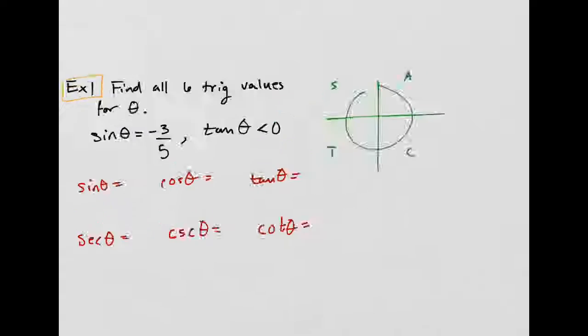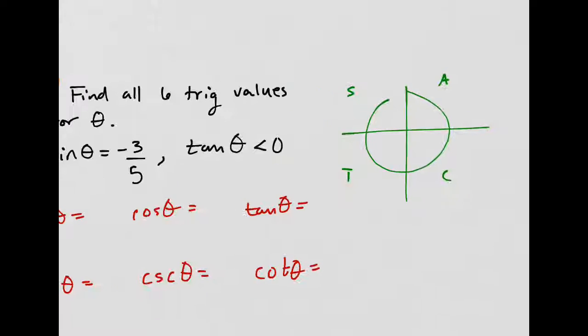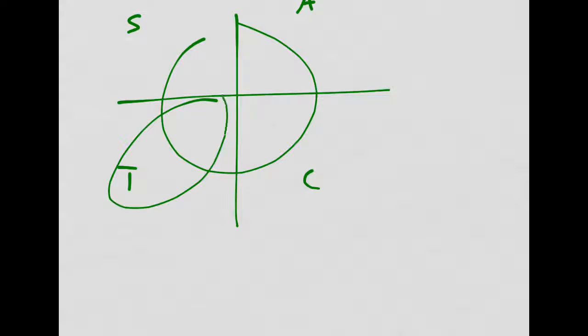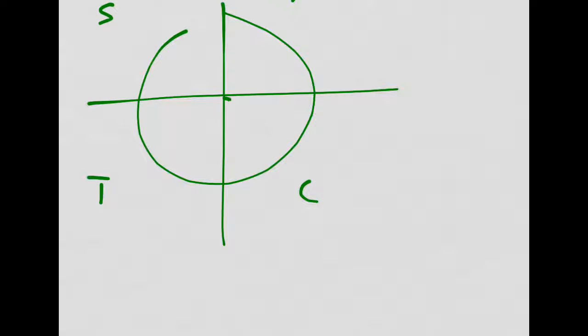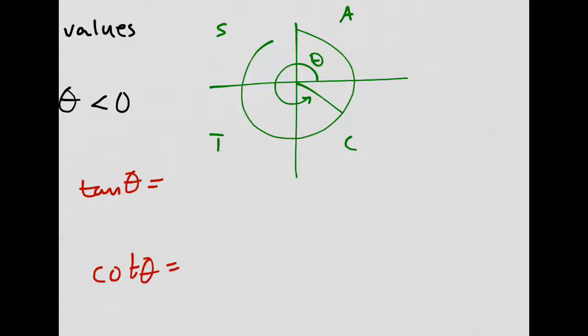We know that sine is negative, so that's somewhere down here because that's the y-coordinate - where you get negative y-coordinates. It also says tangent is negative. This is where tangent is positive, so it cannot be in this quadrant. It must be in the fourth quadrant.